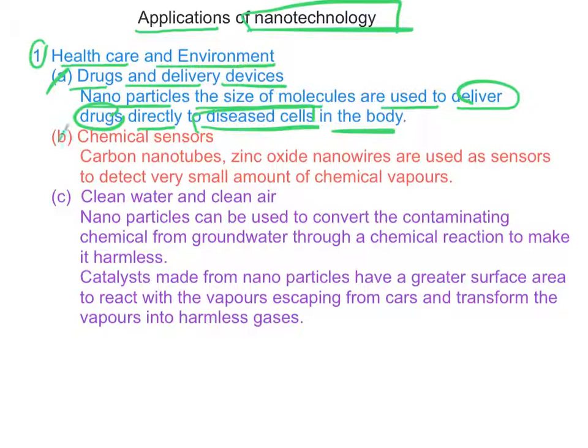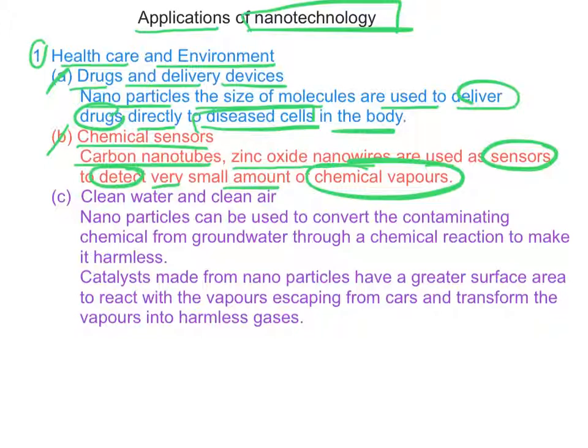The second is chemical sensors. Carbon nanotubes and nanoparticles are used as sensors to detect very small amounts of chemical vapors.